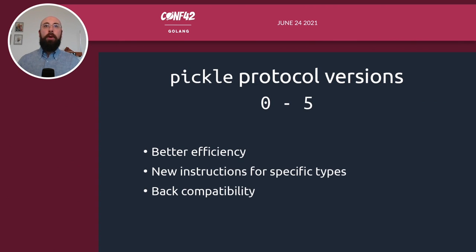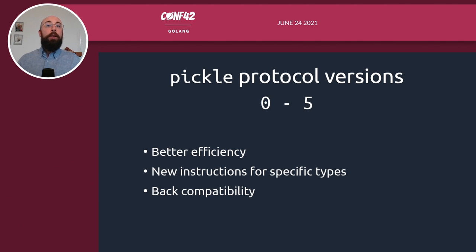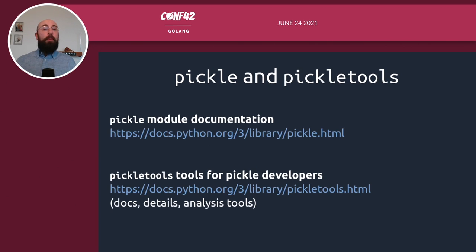Another important thing about the Pickle module is that it comes with different protocol versions. At present, there are six different versions, numbered from zero to five. Each protocol version identifies a set of instructions that the underlying virtual machine can handle. New protocol versions were introduced over time for reasons such as better efficiency, or to handle specific Python types coming with newer Python releases. Each protocol version is backwards compatible with all previous versions. For further details, you can visit the official Python documentation for the Pickle module and also the pickletools module.